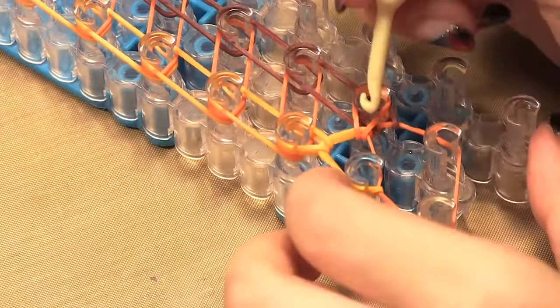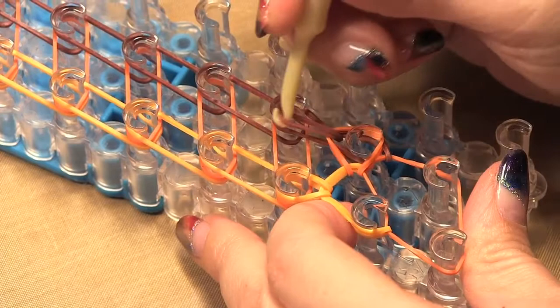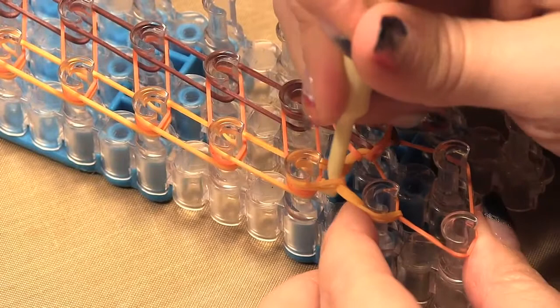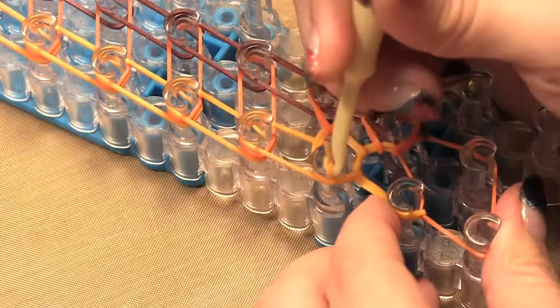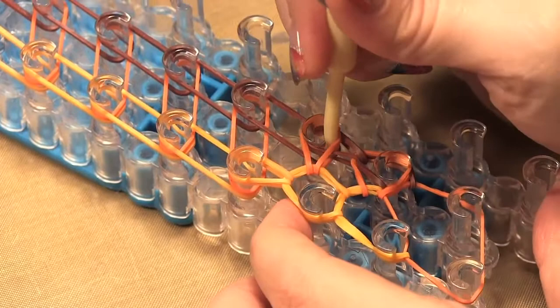So now we move to the peg on the right and move all the other elastics out of the way to bring that burgundy forward. Then we go back to the left, pick up the top elastic and move it to the center, and pick up the bottom elastic and move it forward.